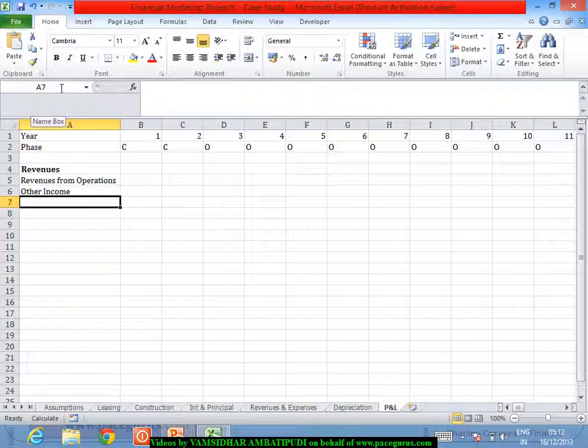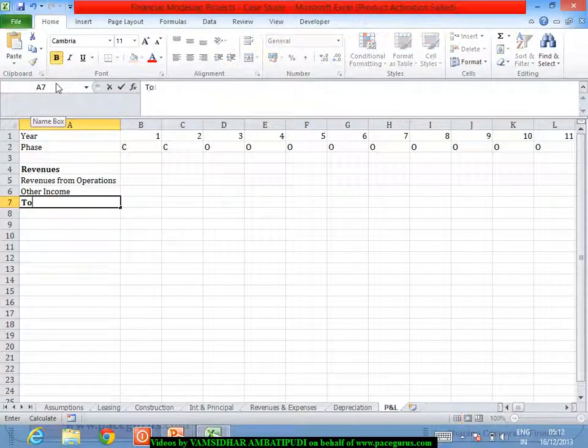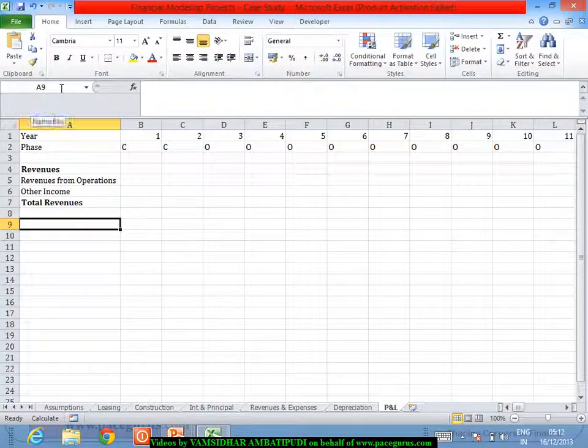Only after I prepare a cash flow statement, I can talk about what is the cash surplus or what is the DSRA requirement for each of these periods. Whatever is the interest that I am getting on top of these two accounts will go as a part of my P&L statement as a part of the other income. Finally saying the total revenues. Then, we are talking about expenses,